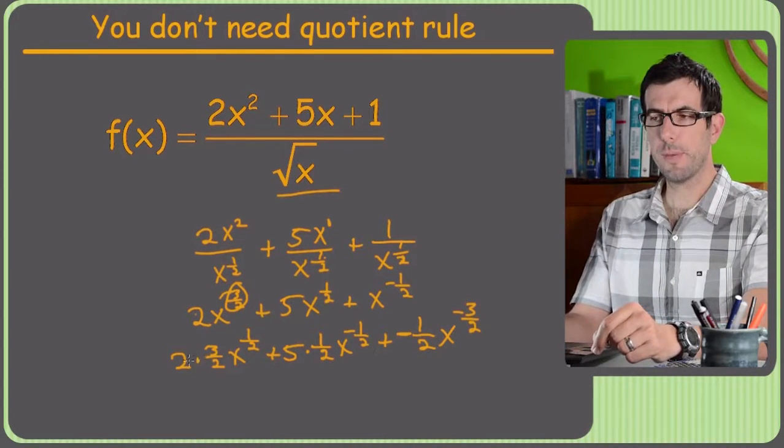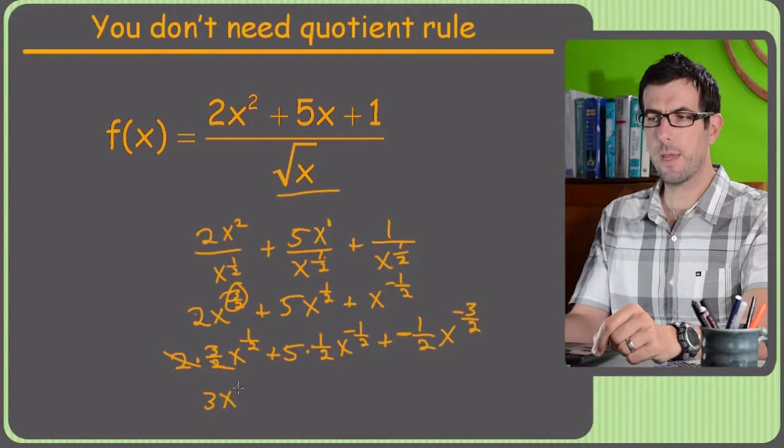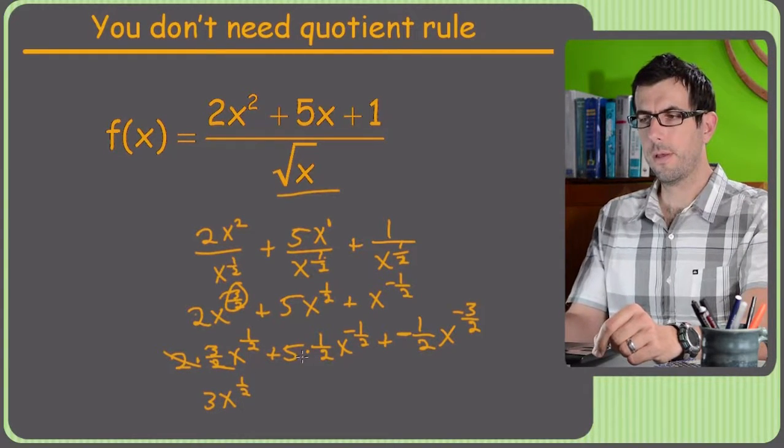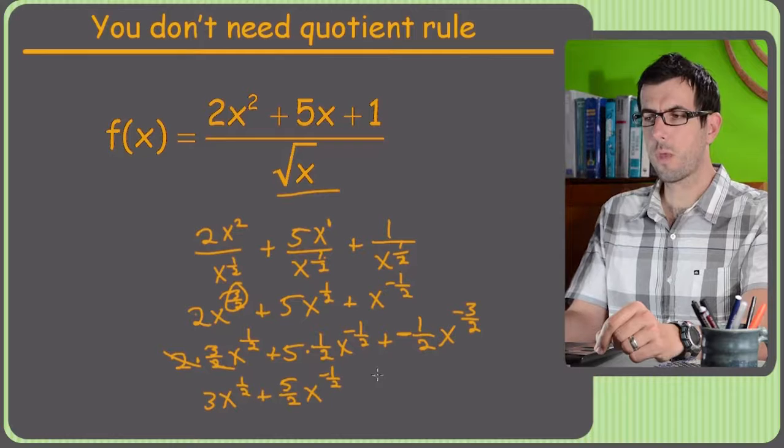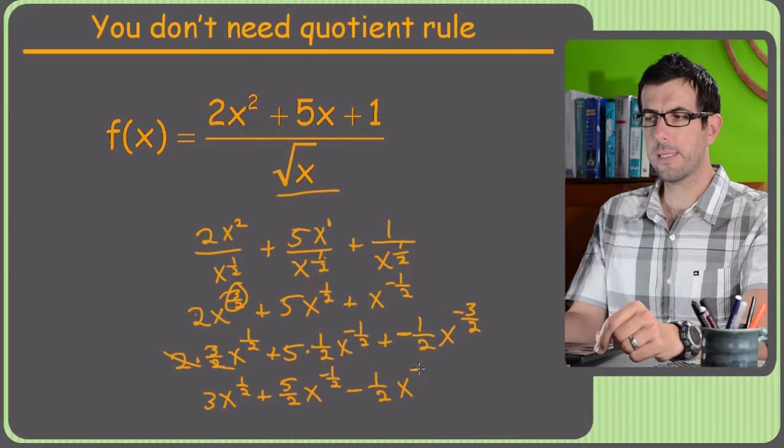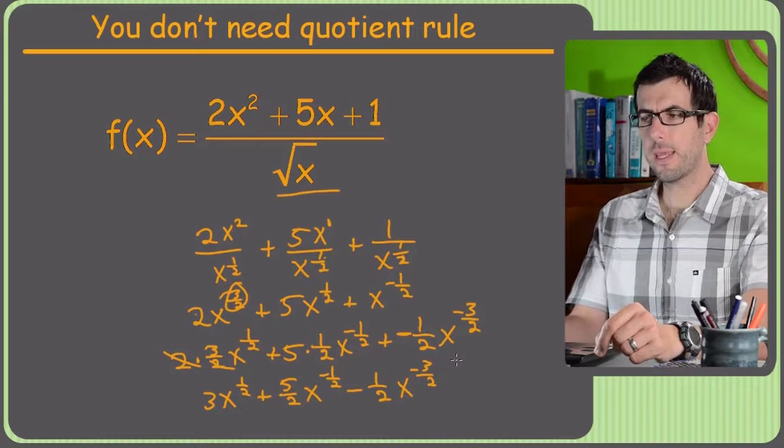Sweet. So now we just multiply through, halves cancel, so we get 3x to the 1 half, plus 5 halves, x to the negative 1 half, minus 1 half times x to the negative 3 halves. And you might be thinking, hey Chris, that seemed pretty painful.